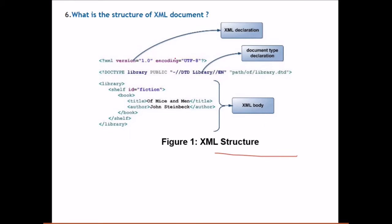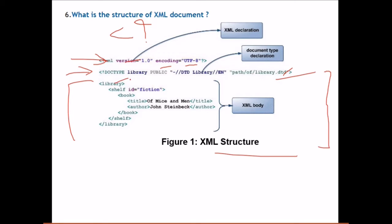What is the structure of an XML document? The structure includes an XML declaration at the top, written with a question mark, specifying the version and encoding — UTF-8 indicates Unicode. There is also a document type declaration (DTD), which provides the path to the DTD file defining the document's structure. The XML body follows, containing user-defined tags such as 'library,' 'shelf' with a shelf ID attribute, 'book,' 'title,' and 'author.' Each opened tag is properly closed in reverse order.